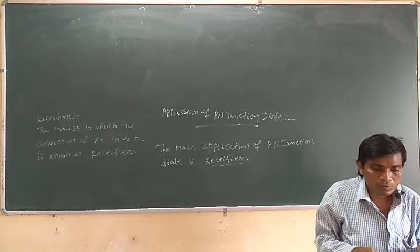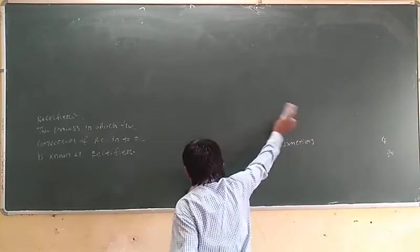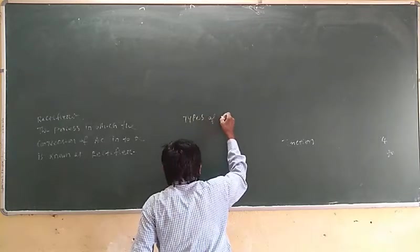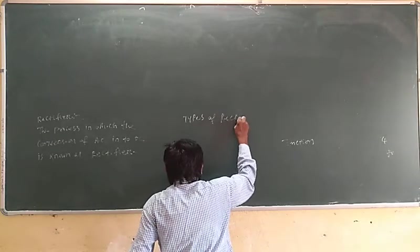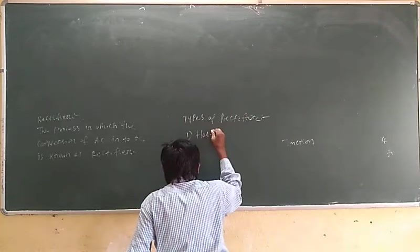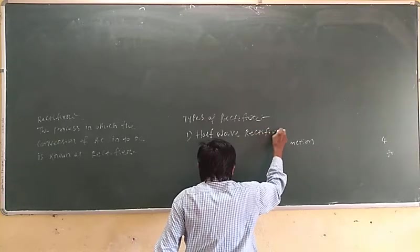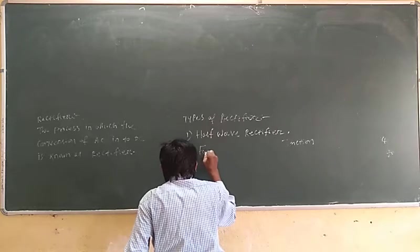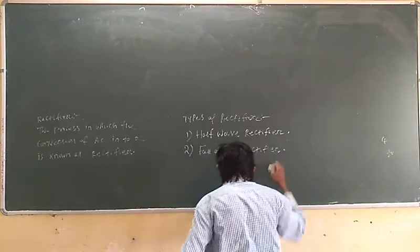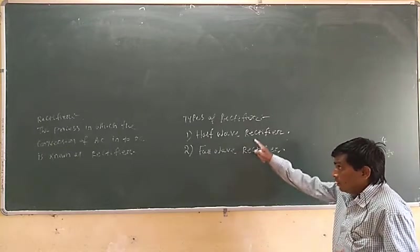There are mainly two types of rectifier. The first is the half wave rectifier and the second is the full wave rectifier. From these two processes of rectifier, we will now start with the half wave rectifier.